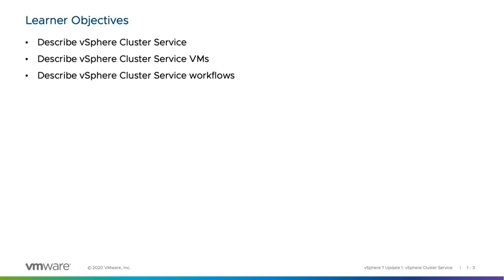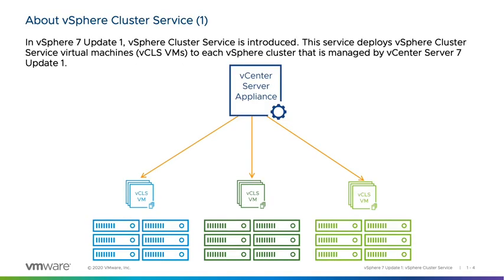In vSphere 7 Update 1, the vSphere Cluster Service is introduced. This service deploys vSphere Cluster Service virtual machines — vCLS VMs — to each vSphere cluster managed by a vCenter Server 7 Update 1. The vCLS VMs are deployed at cluster creation time after hosts are added to the cluster. In future releases, vCLS VMs will provide vSphere cluster services to workloads even if vCenter Server is offline. vCLS VMs are also deployed to existing vSphere clusters after vCenter Server is updated to 7 Update 1.